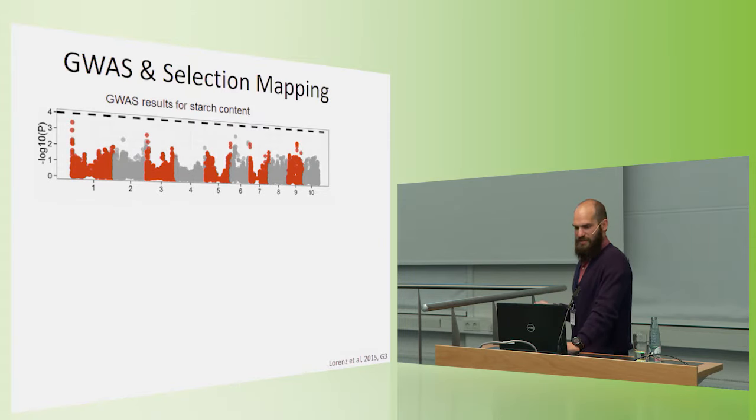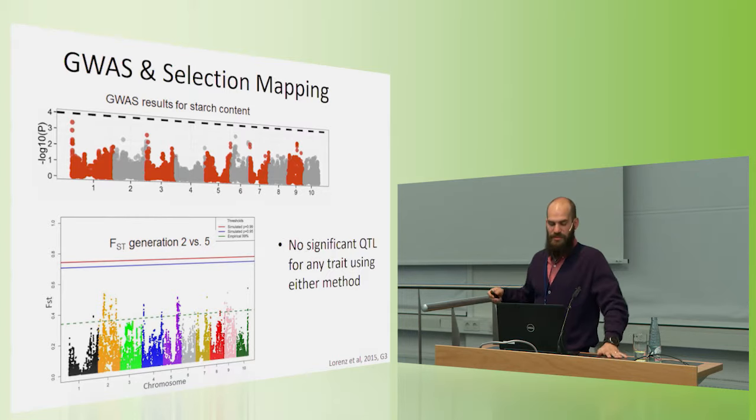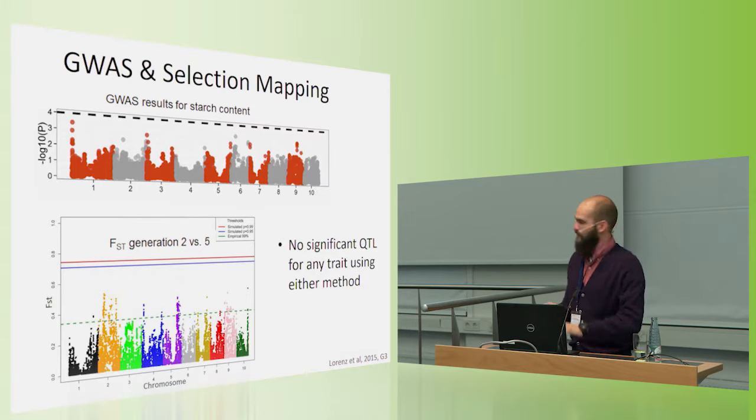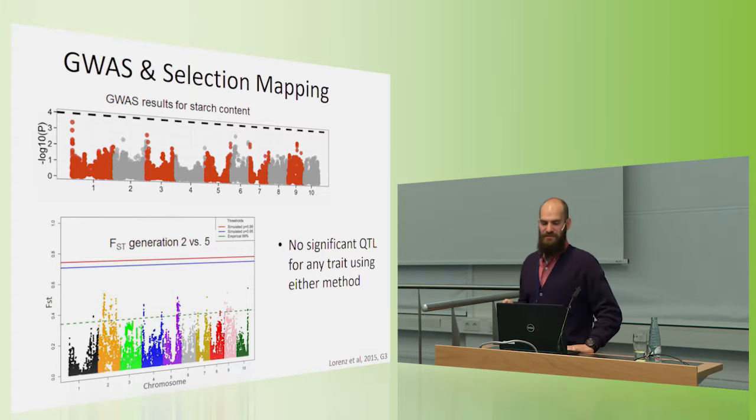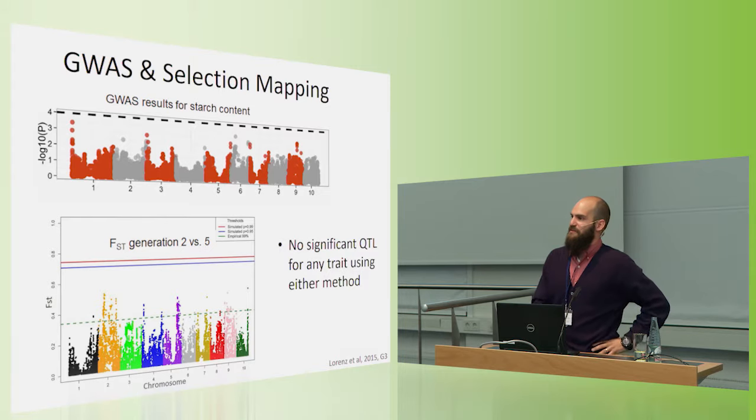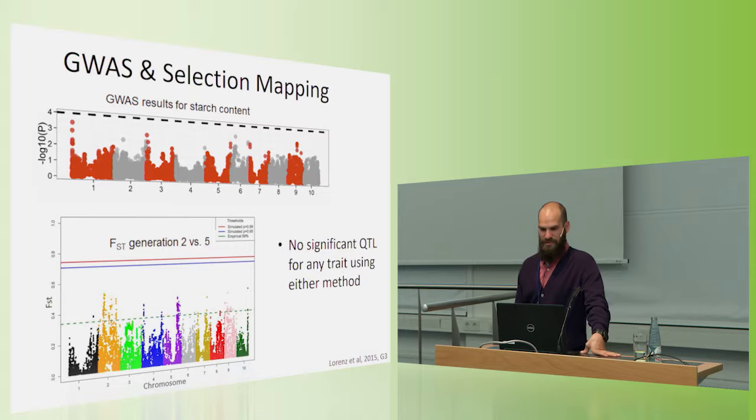We thought at the time that we could rescue this with selection mapping, and we used a technique called FST. And for those who don't know it, I'm not even going to describe it other than you look at the difference between allele frequencies before and after selection to see if the population's been changing. So when we did this, we again had absolutely no significant evidence of selection. The blue and the red bar are the decent confidence intervals. The green bar here is imaginary. So this tells us that there's no significant QTL for any trait using either of these methods to identify what's important. But we know the population's improved, so we know there's genetic changes. So we were scratching our heads to figure out how can we study, genetically, has there been selection on these traits? Or how can we confirm that there's been positive selection on these traits?